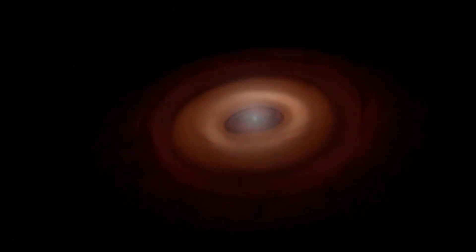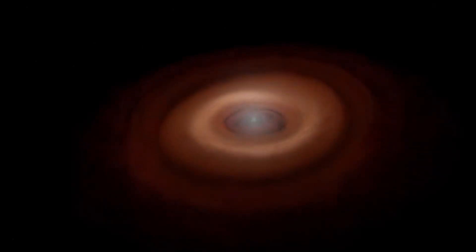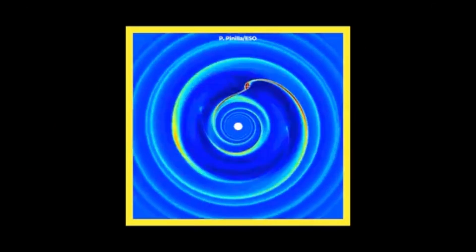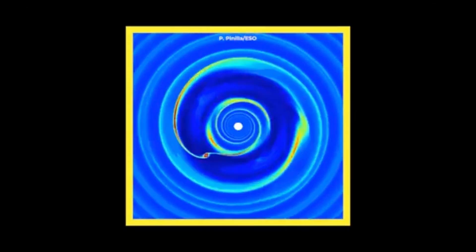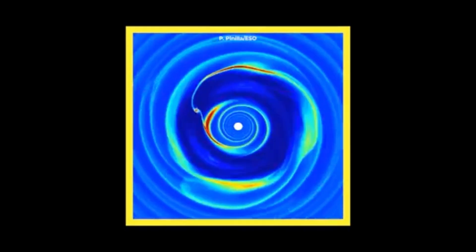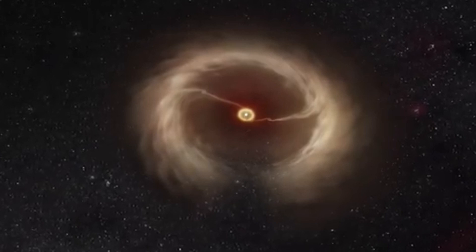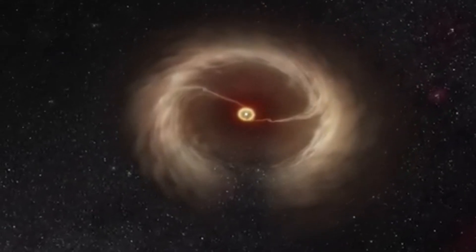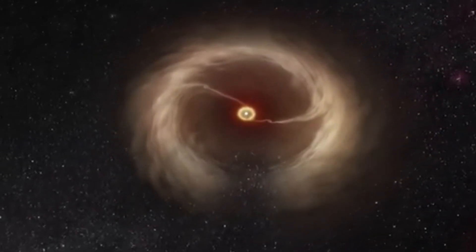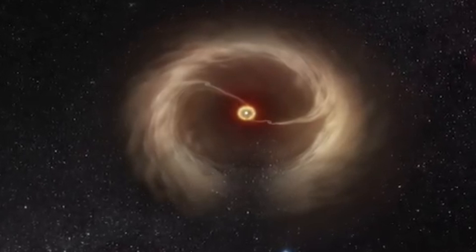Now you might be wondering, where is all this gas and dust coming from, especially in such a remote region? That's part of the mystery. Even though CX 330 is far from the usual star-forming regions, there must be some remaining pockets of material nearby, perhaps remnants from the star's formation or a very thin, sparse cloud of gas that the star is slowly consuming.